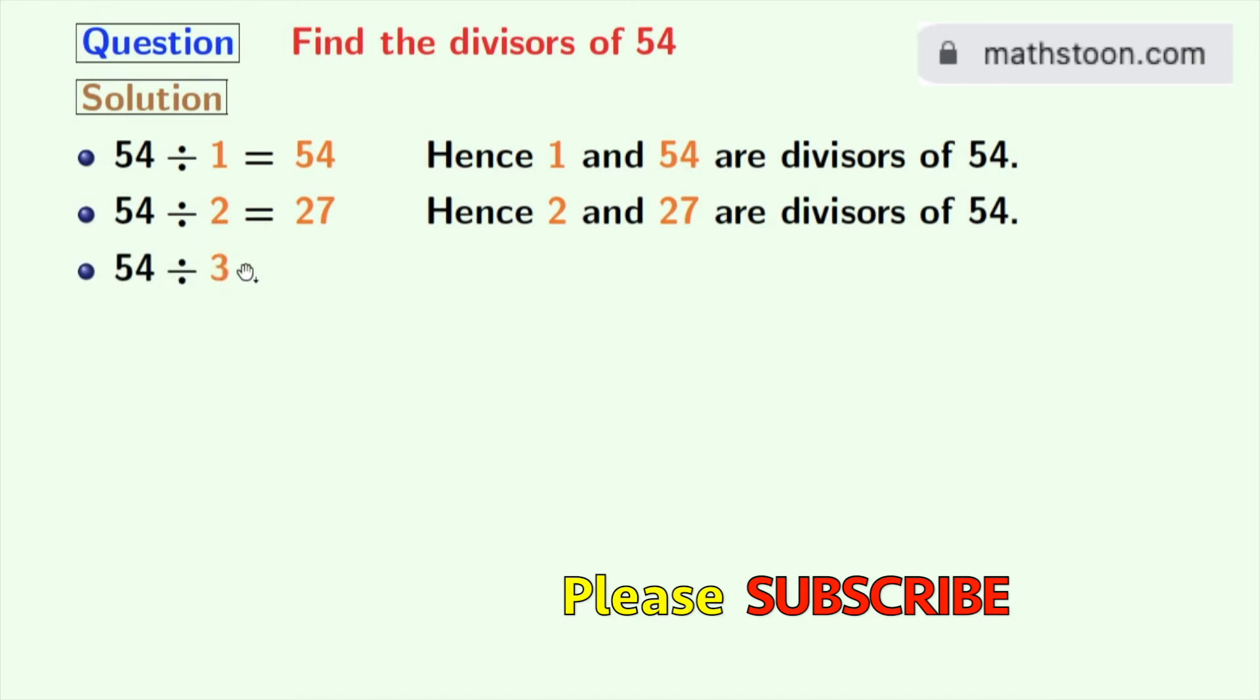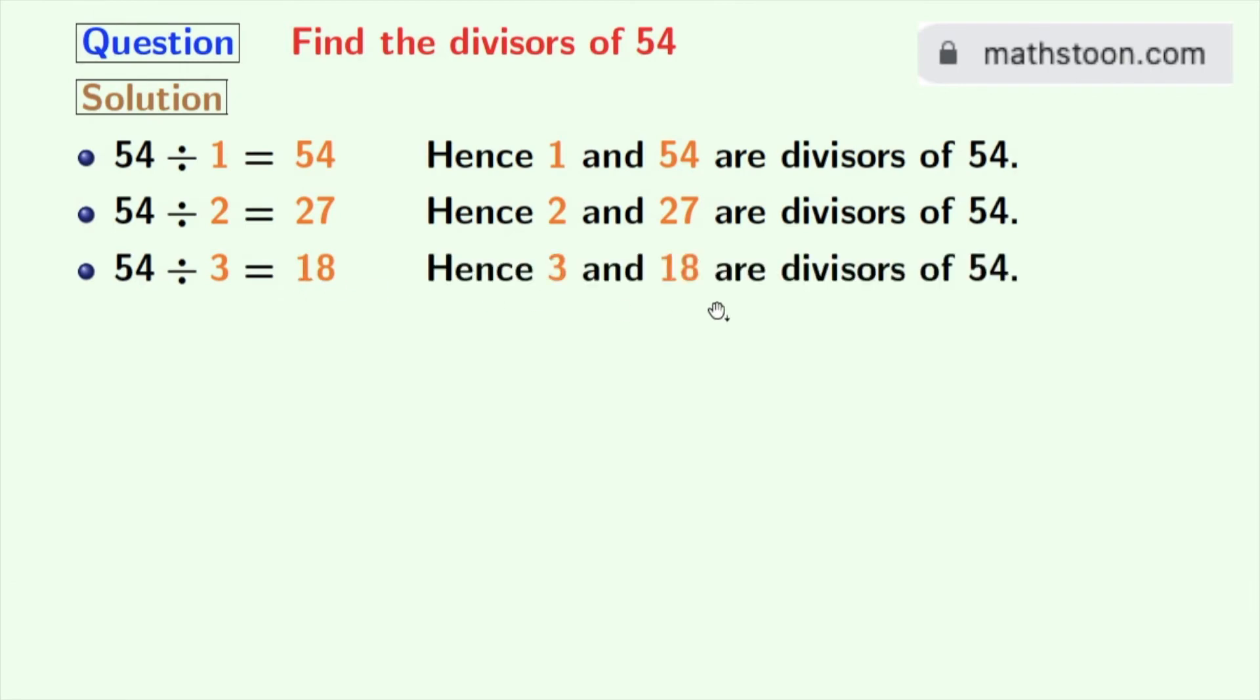54 divided by 3 is 18, so 3 and 18 are the divisors of 54. Next, numbers 4 and 5 do not divide 54, so we will try for 6.